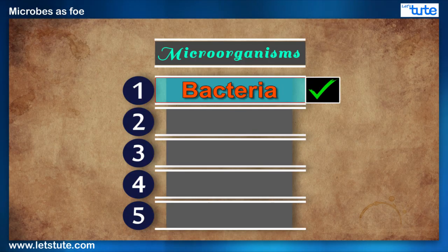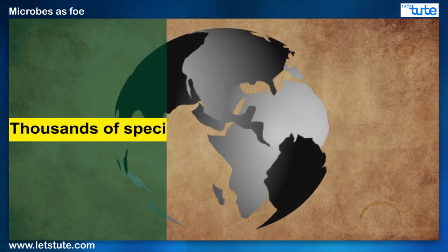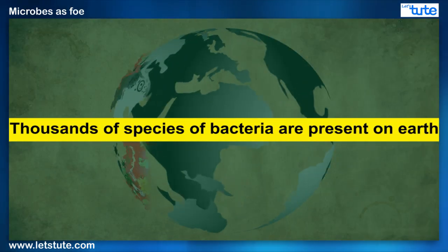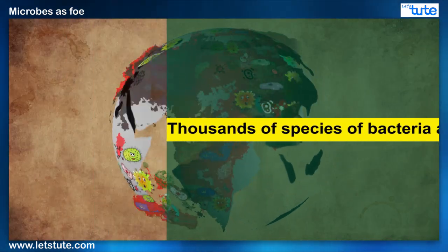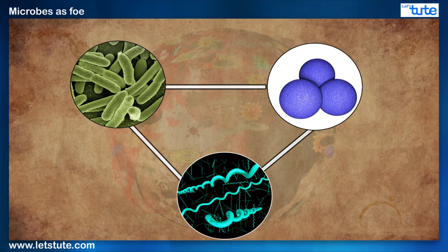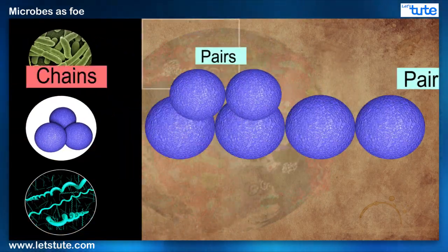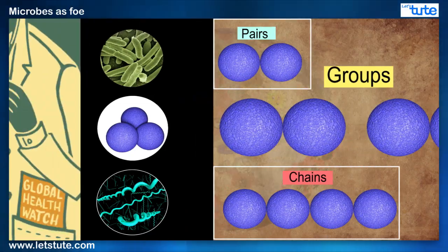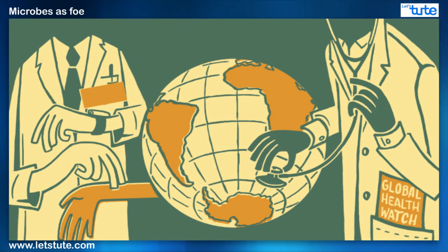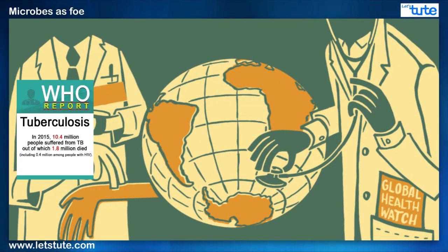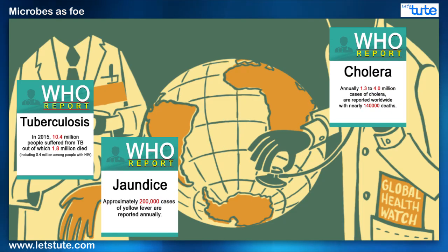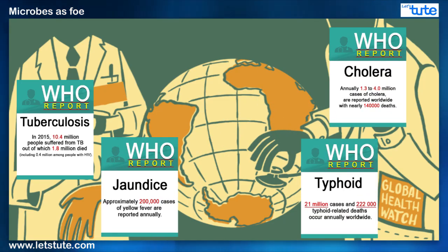Bacteria make up the first category. They are a very complex group of life forms, with thousands of species present on earth. They are found to have various shapes and are present as solitary entities or exist in pairs, chains, or groups. Among all microbes, bacteria can top the list of disease-causing organisms, wherein tuberculosis, jaundice, cholera, and typhoid are just some of many examples of diseases caused by them.